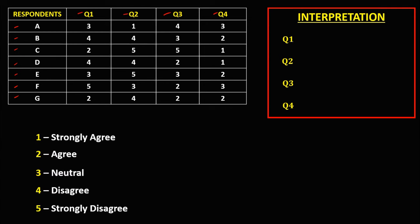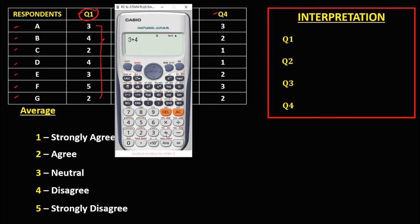Take note: 1 is strongly agree, 2 is agree, 3 is neutral, 4 is disagree, and 5 is strongly disagree. First, we need to find the average for every question. For question number 1, add all the numbers and divide by 7 because we have 7 respondents. So we have 3 plus 4 plus 3 plus 3 plus 5 plus 2 — add all these numbers and divide by 7. The average, using 2 decimal places, is 3.29.